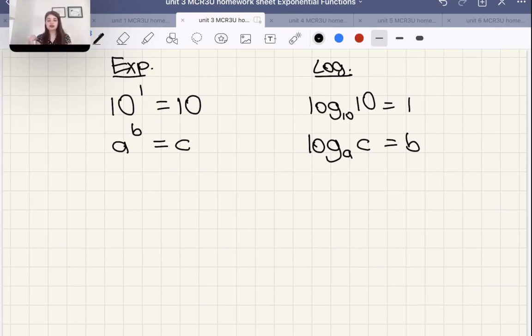And something else I should mention is let's say you see just log and then some number. So log 5, for example. What this means is there's an invisible base 10 with this logarithm. So whenever there isn't a base, we assume base 10. If there is a base, then we assume that base that it says.